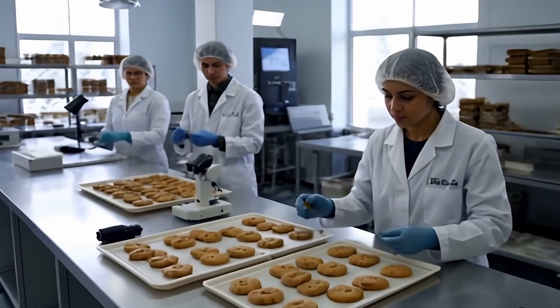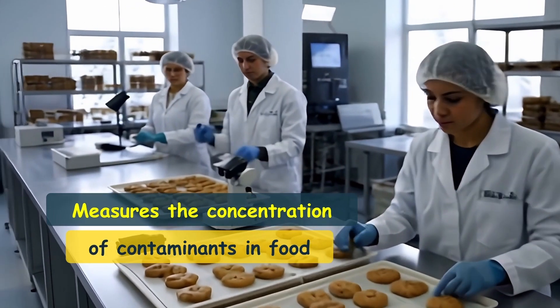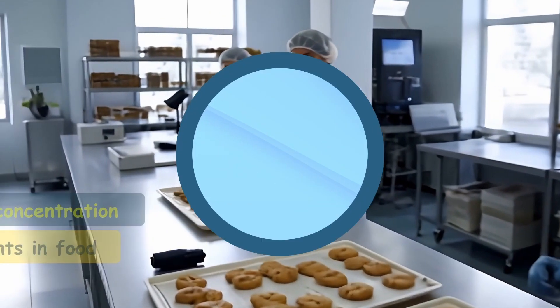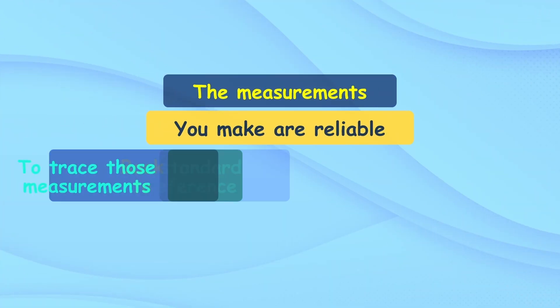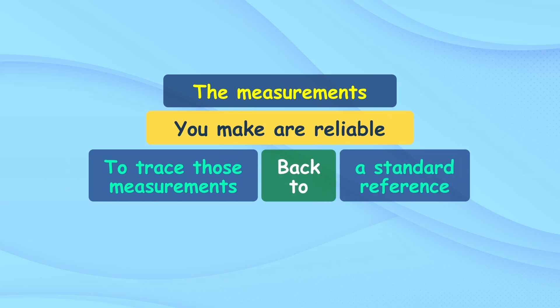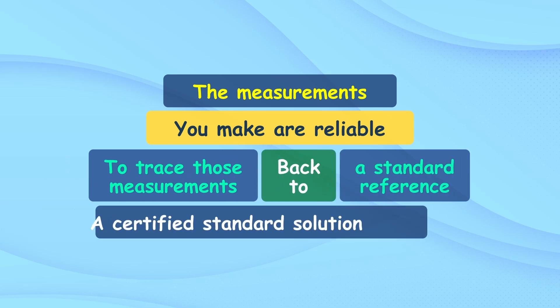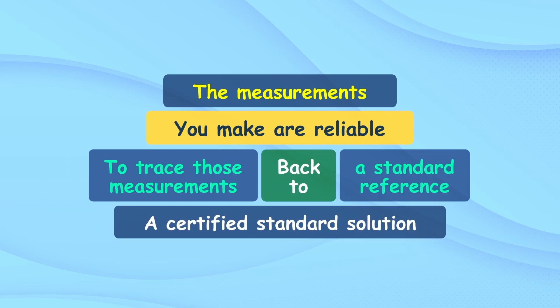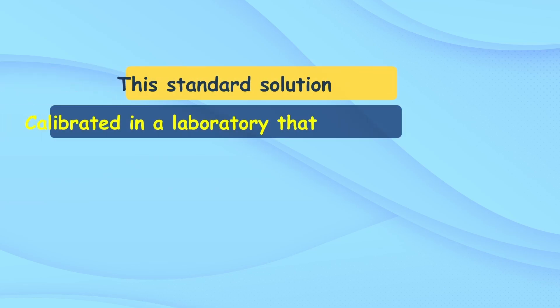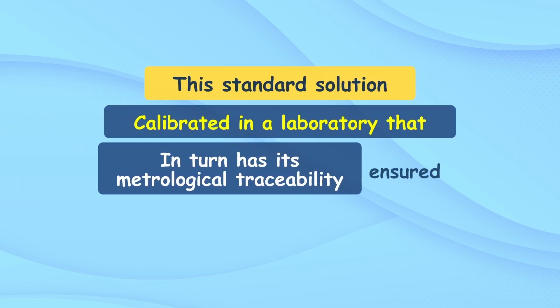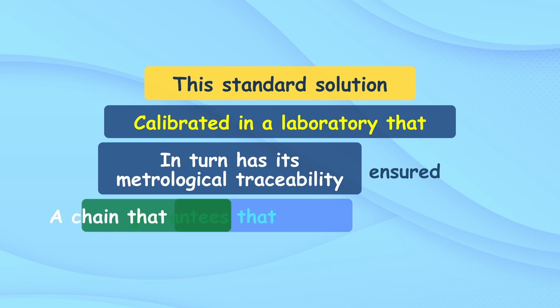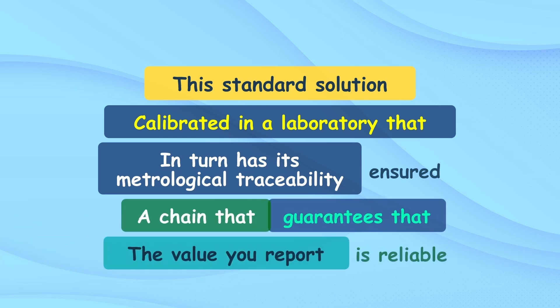Imagine you work in a laboratory that measures the concentration of contaminants in food. To ensure that the measurements you make are reliable, you must be able to trace those measurements back to a standard reference, such as a certified standard solution. This standard solution must have been calibrated in a laboratory that in turn has its metrological traceability ensured, creating a chain that guarantees the value you report is reliable.